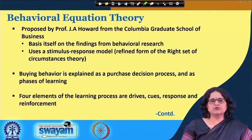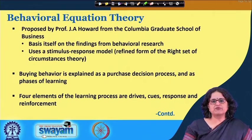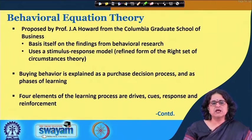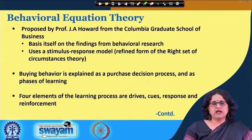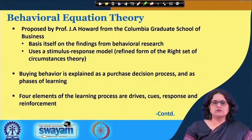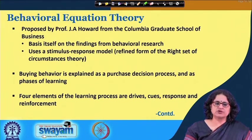The behavioral equation theory was proposed by Professor Howard from the Columbia Graduate School of Business, and it bases itself on the findings of behavioral research. It is a combination of both the buyer and seller-oriented theory of selling, and it uses the stimulus-response model. In one way, it is also a refined form of the right set of circumstances theory.